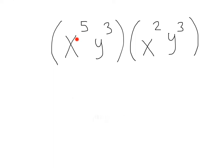Let's try another one. Here we have x to the 5th, y to the 3rd times x squared, y to the 3rd. First, we want to see where we have the same bases. Here I have an x and here I have an x. So let's start with that — x to the 5th times x squared. Remember, you can add your exponents. That'll give us x to the 5 plus 2, or x to the 7th.